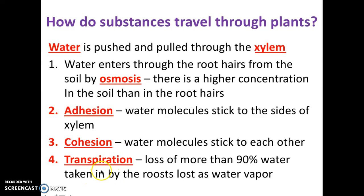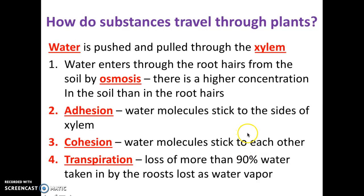Transpiration is basically the process of transport of water from the roots up to the leaves. Plants are actually going to lose 90% of the water taken through the roots as water vapor. A lot of the water plants take in through the process of transpiration — 90% of it — will be lost as water vapor at one point or another through the leaves of the plants.